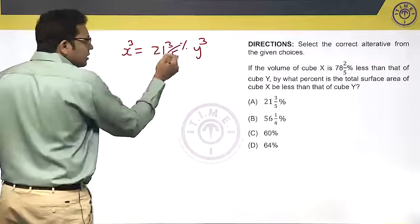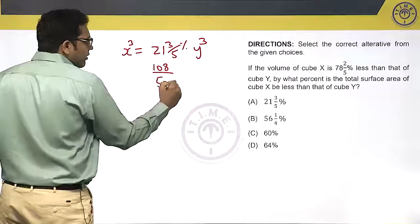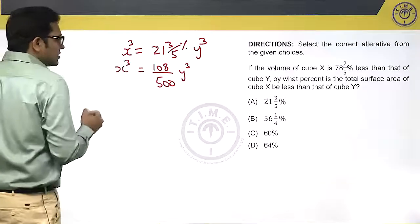What is 21 3/5 percent? 108 divided by 500 times y³ equals x³.